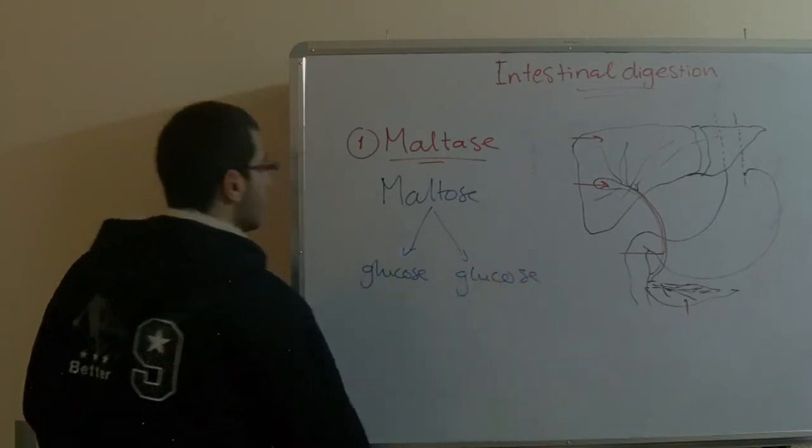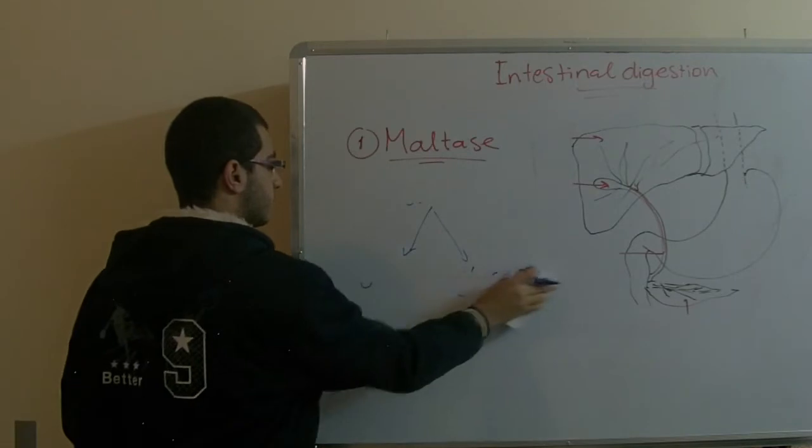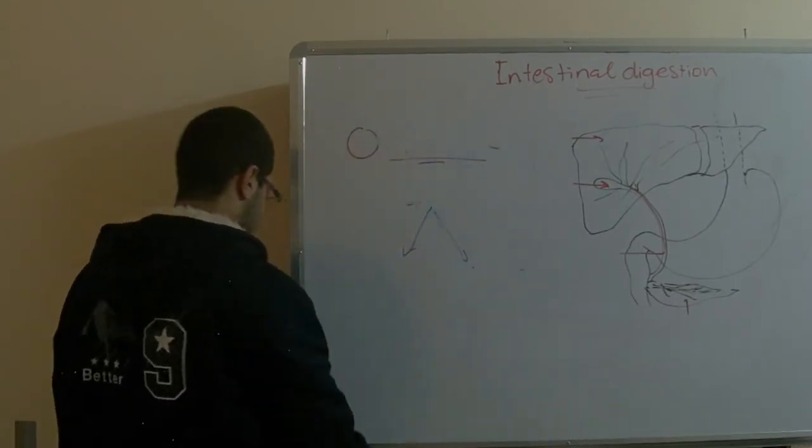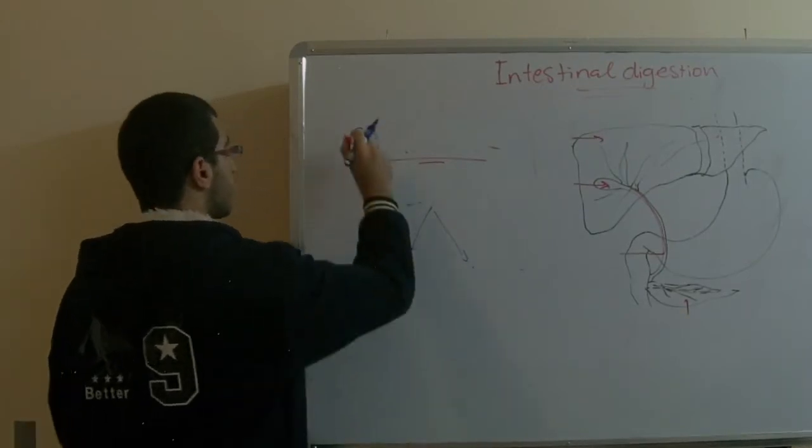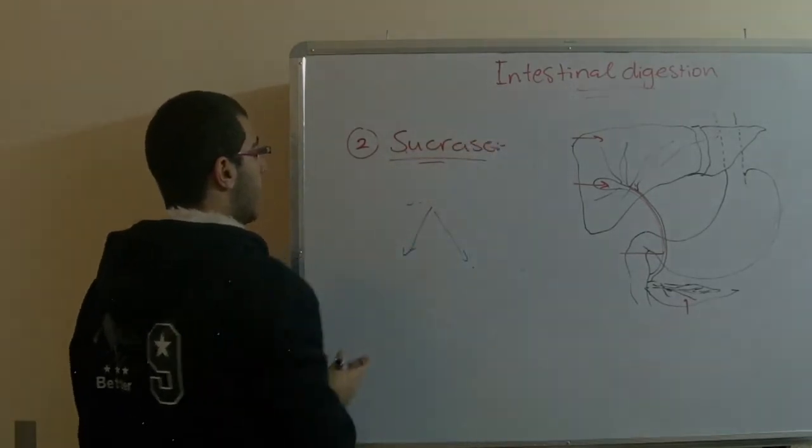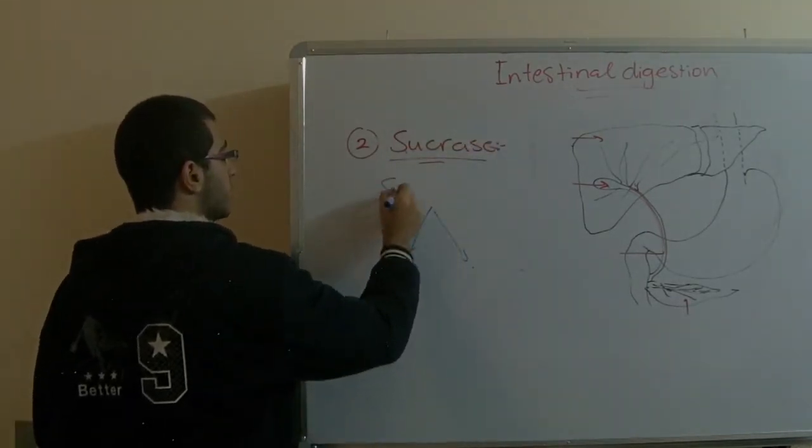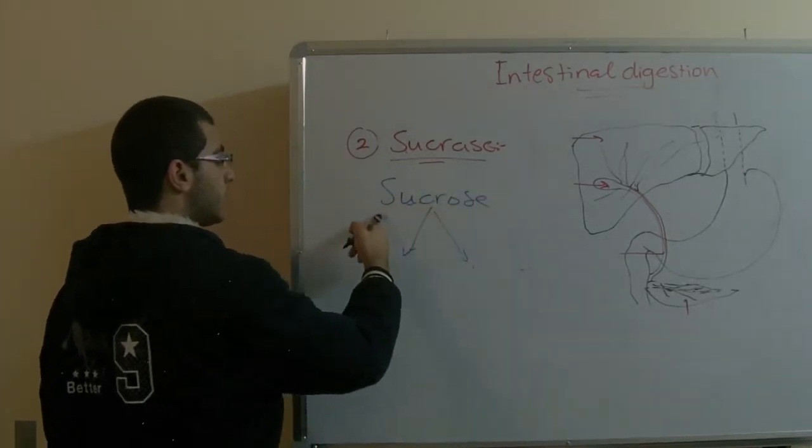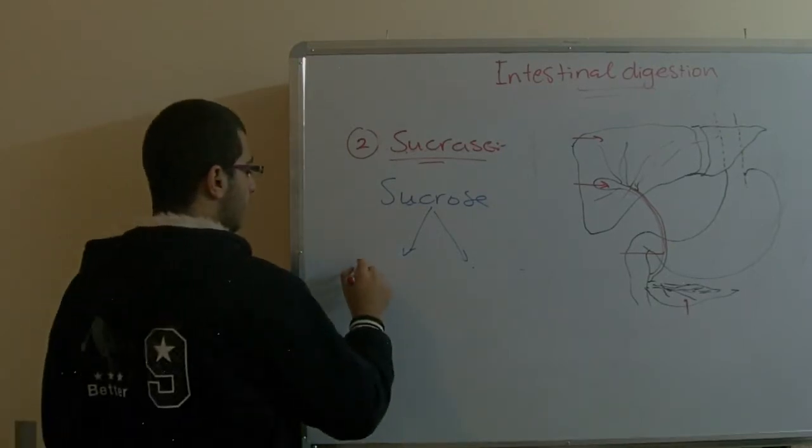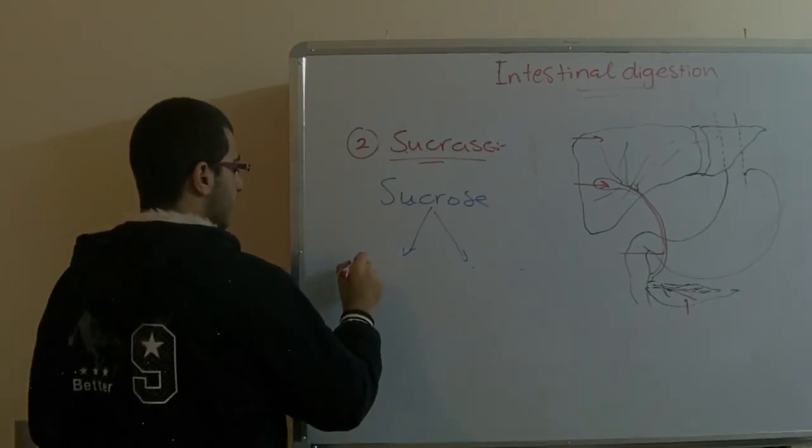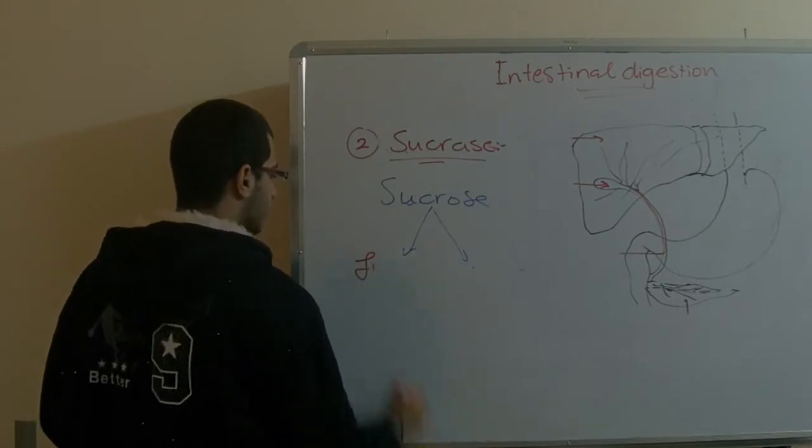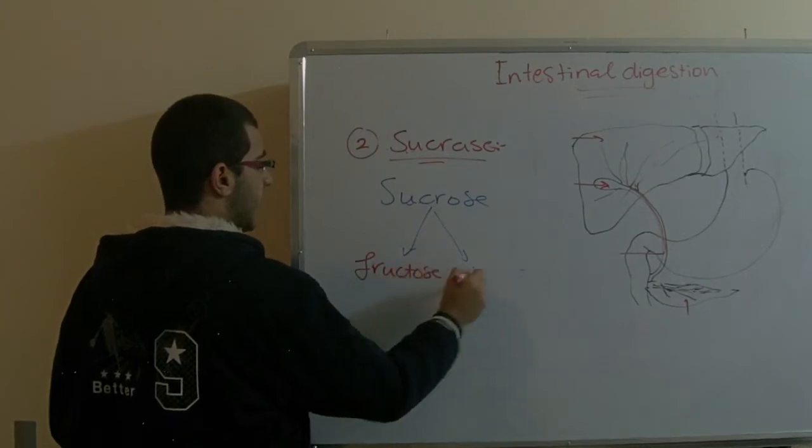The second one is called the sucrase. This sucrase breaks down the bonds between the sucrose sugar to yield fructose and glucose.